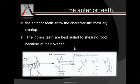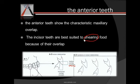In the contact of the anterior teeth in maximum intercuspation, the lower incisors contact the lingual incline of the upper incisors, forming the vertical overlap, which is called the overbite, and the horizontal overlap, which is called the overjet. Because of this typical feature, incisors are best suited for shearing food.